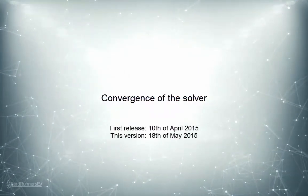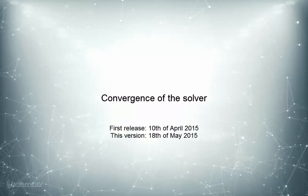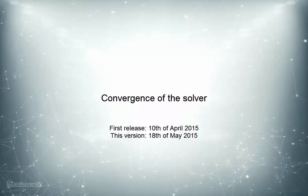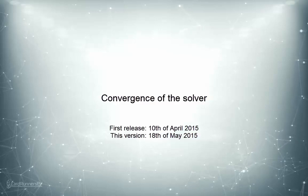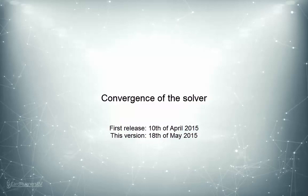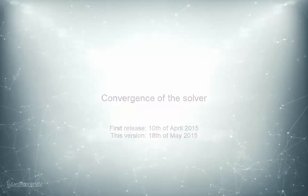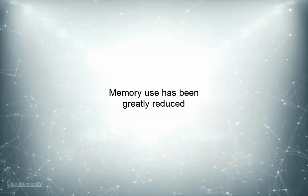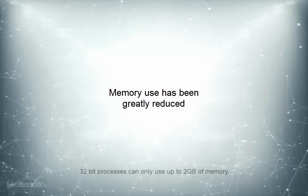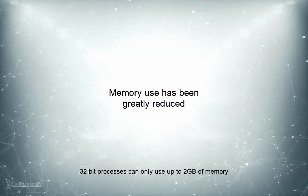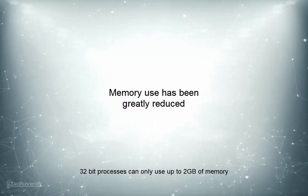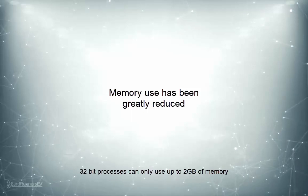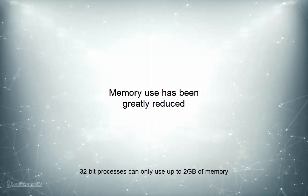If you used the first beta release of the solver, which was released in April 2015, you will probably notice that the solver already converges much faster than before. A lot of work has been done on the engine over the past month, and we're about halfway there. I expect that the final release will be even faster and will converge more smoothly. Another aspect of the engine that has been greatly improved is memory use. This has been a rather important area to focus on, given that CartRunner's EV is a 32-bit process. The challenge here is that 32-bit processes have a limitation that they can only use up to 2GB of memory — they cannot exceed this amount regardless of how much memory is present on your computer.